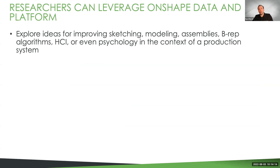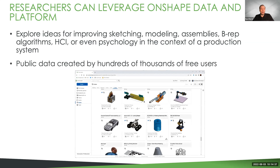With Onshape you get two things. You get a platform you can test with and build upon using tools like FeatureScript and our API — this can be used for prototyping new algorithms for modeling, sketching, or assembling, and for exploring what users do and how they think about design problems. And you get our public data, which you can use as test cases, illustrations, or for inspiration. As much of today's research is about deep learning, which lives or dies by training data, Onshape's public data can come to the rescue.